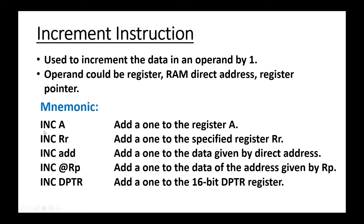These are the mnemonics — these are the variations in increment instructions. INC A increments the content of register A by one. INC R increments the content of the specified register. INC address adds one to the data at that direct address. INC @R adds one to the data of the address given by the pointer register. INC DPTR adds one to the 16-bit DPTR register.